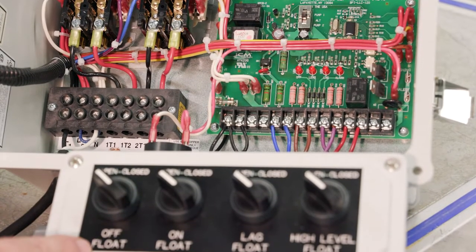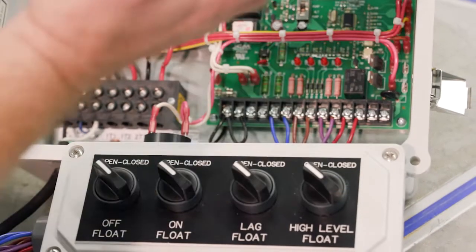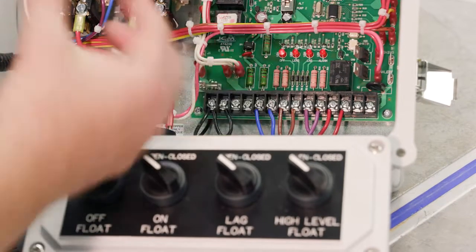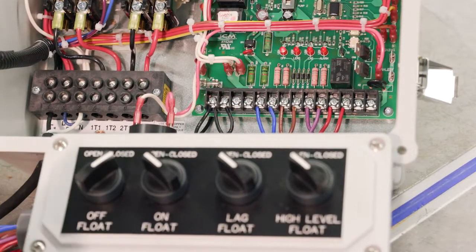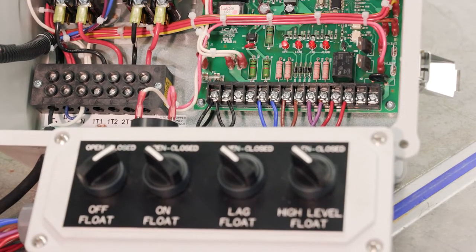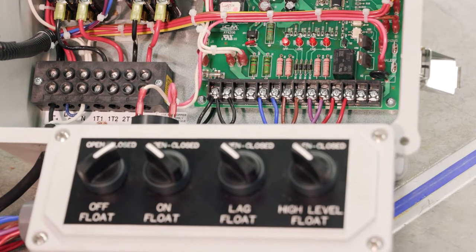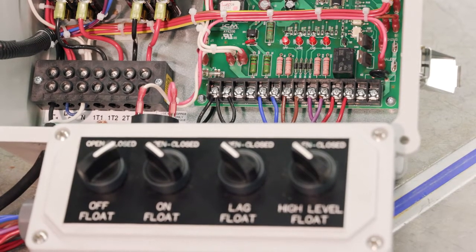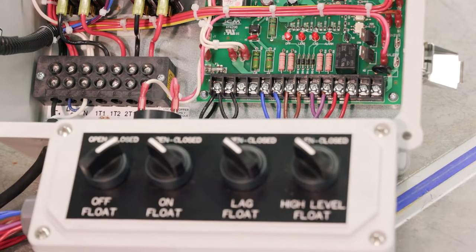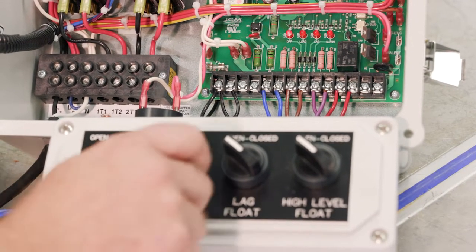So the lowest float is the off float, and the water level rises and turns that on basically, closes those contacts, which again, you can use a jumper. So other than the light going on, the off LED, then nothing else happens, which is what it's supposed to do. So the water keeps rising, it gets to the second float, which is the on float.